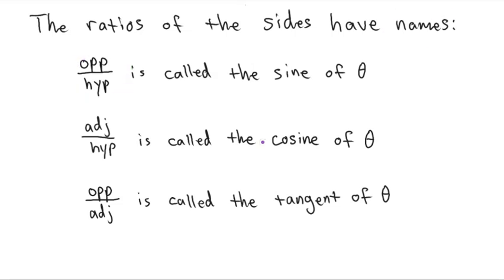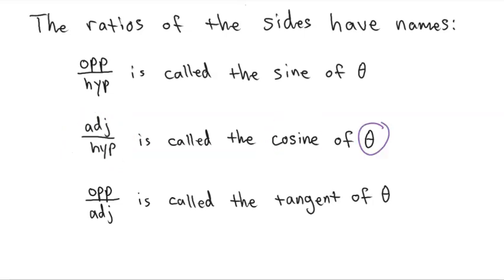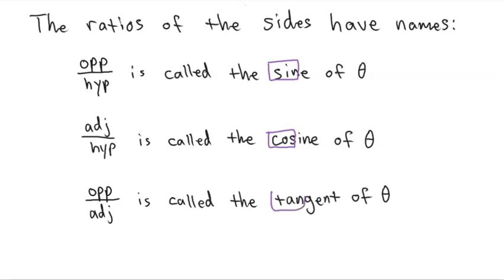We call opposite over hypotenuse the sine of theta. The adjacent over hypotenuse is called the cosine of theta, and the ratio opposite over adjacent is called the tangent of theta. And we have abbreviations: we use three letters — S-I-N, C-O-S, and T-A-N.